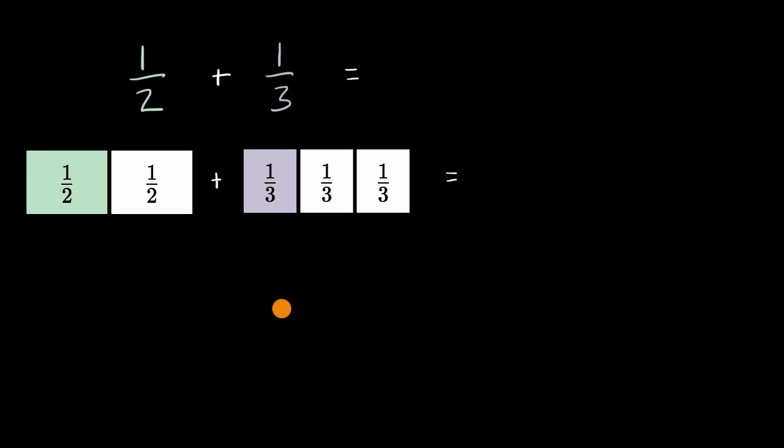Now, one of the difficult things is we know how to add if we have the same denominator. So if we had a certain number of halves here and a certain number of halves here, well then we would know how many halves we have here. But here we're trying to add halves to thirds. So how do we do that?